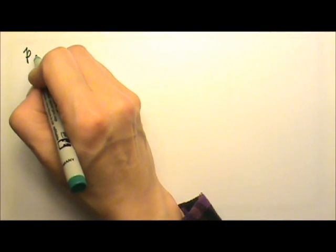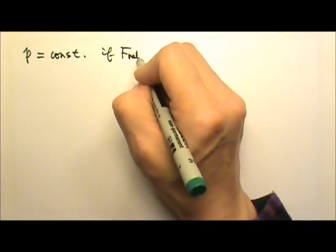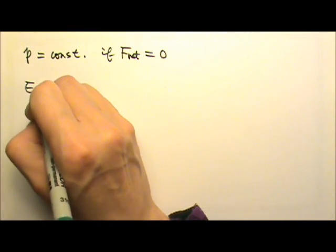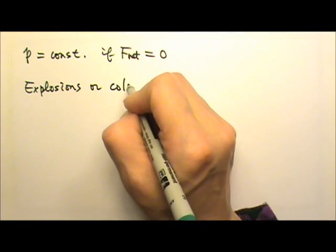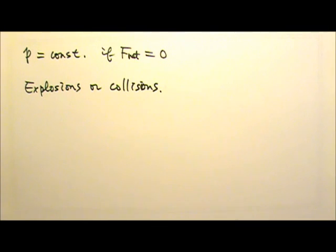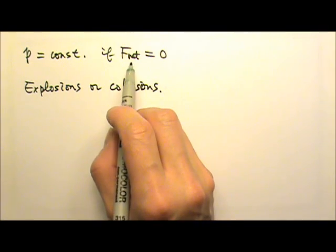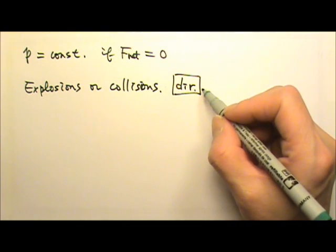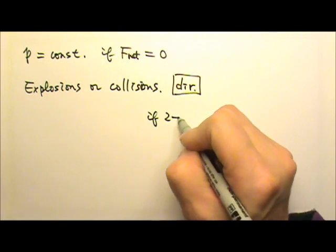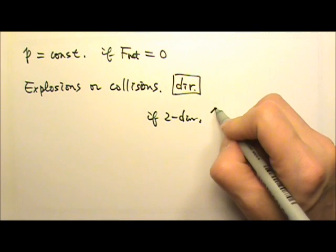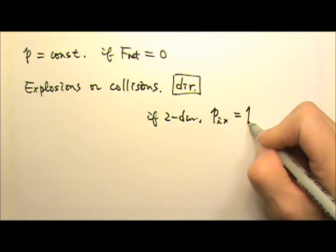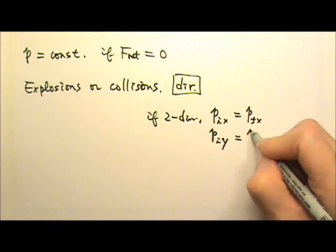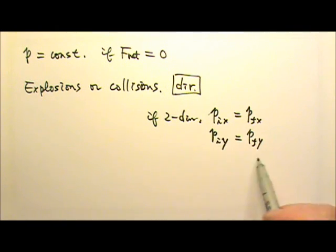We have the conservation of momentum. Momentum is constant if the net force on the system is zero. We use conservation of momentum for explosion problems or collision problems. Since momentum, force, and velocity are all vectors, we need to pay attention to direction — one direction is positive, the opposite is negative. For a two-dimensional problem, we look at one direction at a time: the initial momentum's x-component equals the final x-component, and the initial y-component equals the final y-component.